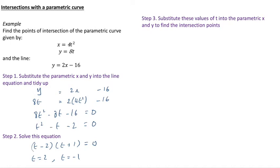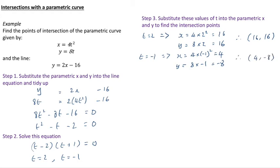So step 3 is we can now substitute these values of t back into the parametric versions of x and y to find the intersection points. So first of all if we put t = 2 into the x function we get 4 × 2² = 16 and for y we get 8 × 2 = 16, and that gives us the point (16, 16). If we put -1 into the x function of t we have 4 × (-1)² = 4 and we have y = 8 × (-1) = -8. So that gives us the point (4, -8).